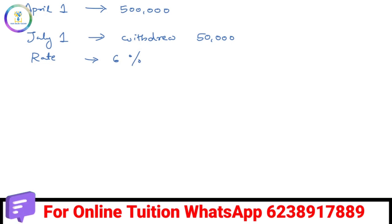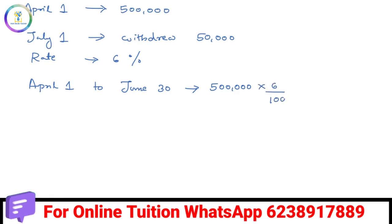The time periods are: April 1st to June 30th is 3 months at Rs. 5,00,000 capital, with 6% interest. For 3 months, the calculation gives Rs. 7,500.